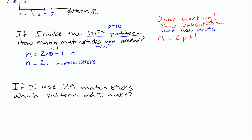So that's pretty straightforward. If we look at another example here, like they'll ask, if I use 29 matchsticks, which pattern did I make? So in this case, 29 matchsticks, is that n or p? That's n is equal to 29. That's the number of matchsticks. And which pattern that you're looking for? That's p that you don't know. So again, you can start with your rule, n is equal to 2p plus 1, and think about replacing the variable that you know, which is the n.